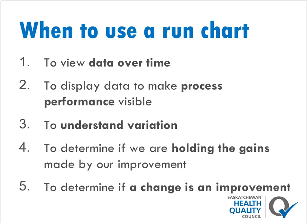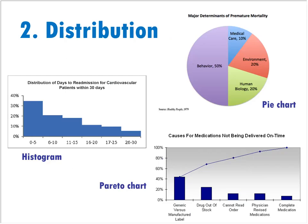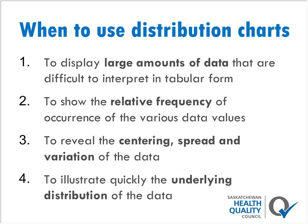Data over time is a good way to present dynamic data when you have that time element. The second general type of chart is a distribution chart. These show the shape and spread of data, typically looking at static data or data at one point in time. These include a pie chart, histogram, Pareto chart, or stem and leaf plot. These are very common in healthcare for understanding the frequency of data. You can use them to display large amounts of data difficult to interpret in tabular form, show relative frequency, reveal centering, spread and variation, and illustrate the underlying distribution.